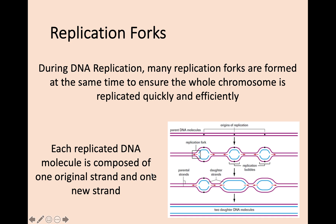It's important to note this doesn't just happen at one end of the DNA and work all the way up — it's continuously happening during DNA replication. To make sure the whole chromosome is replicated quickly and efficiently, there are lots of different replication forks going on throughout the DNA strand at the same time. Every single DNA molecule is composed of one original strand and one new strand, but there are several replication forks working simultaneously.